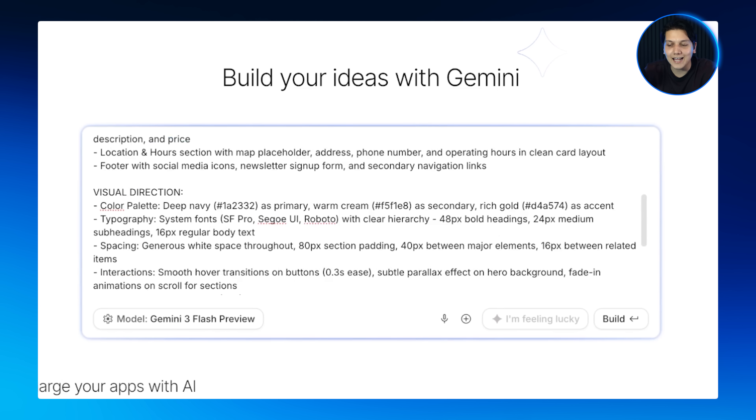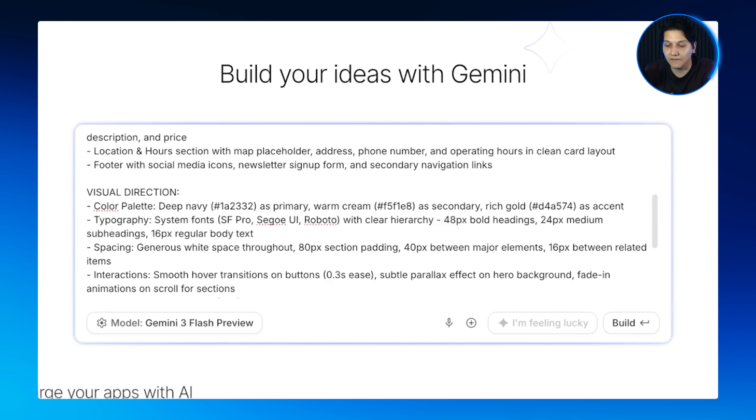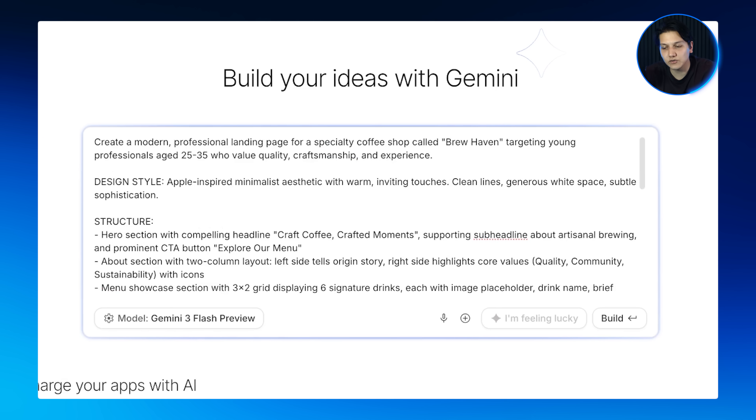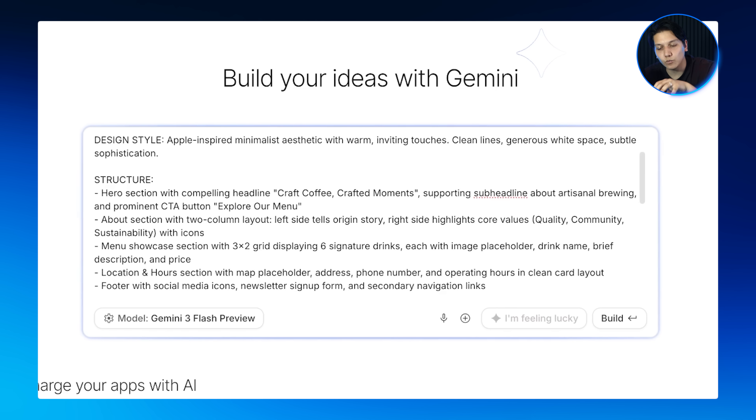Then comes the magic — our visual direction. Here we add our color palette, typography, and other visual elements. Then I add in the technical specifications like the hero section and the layout, and Gemini knows exactly what we need and how it should flow. Now that we have the layout, let's generate.